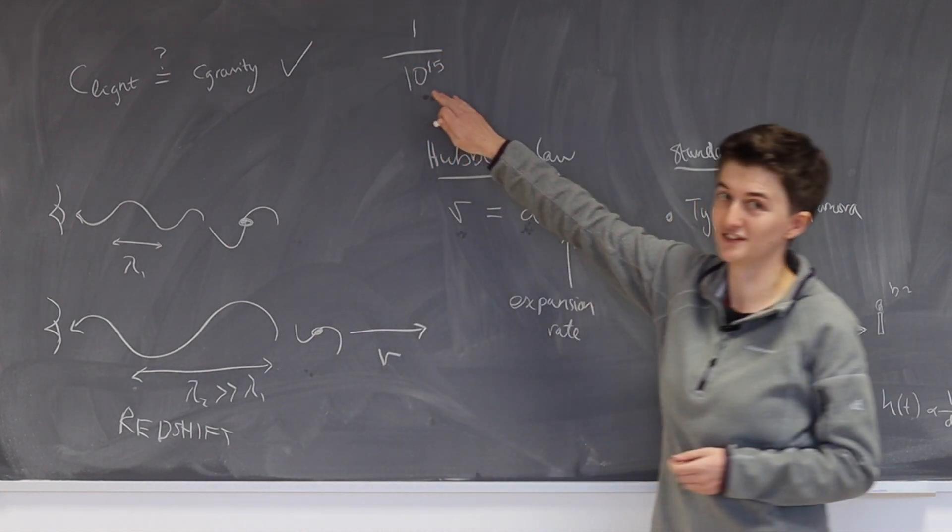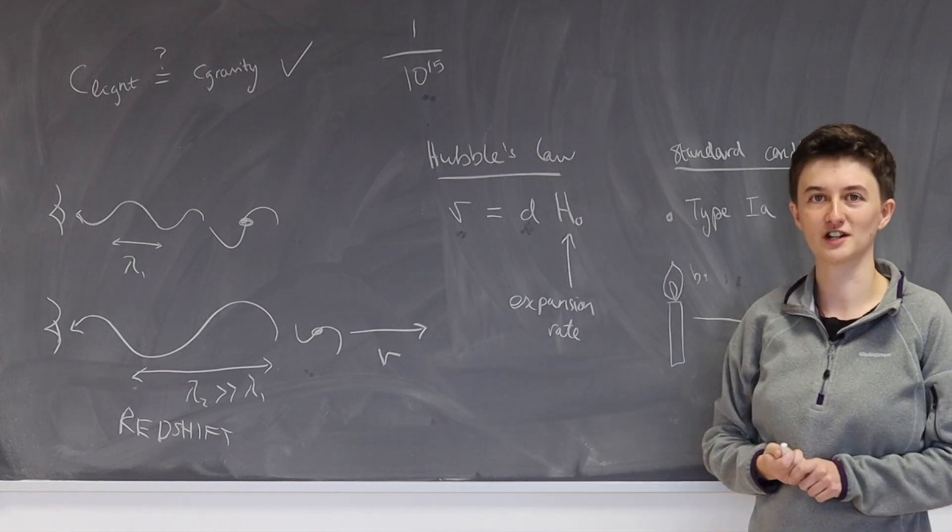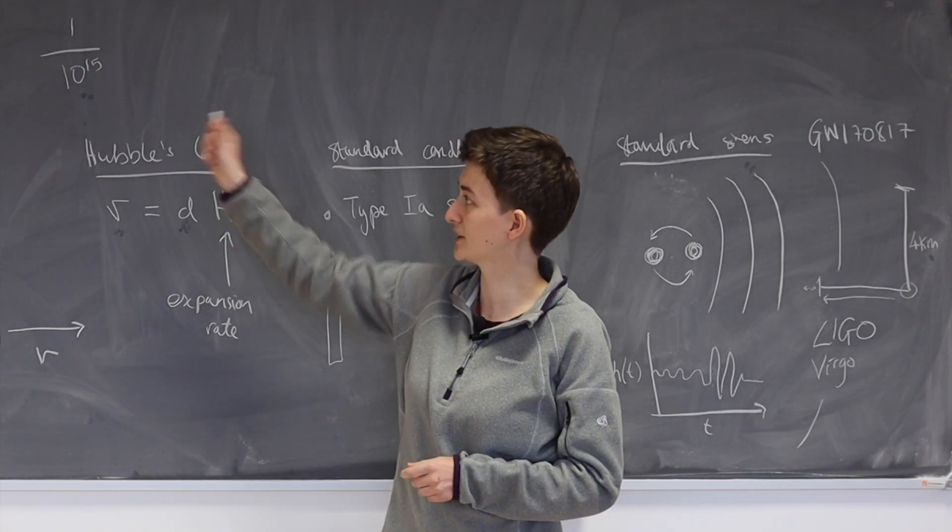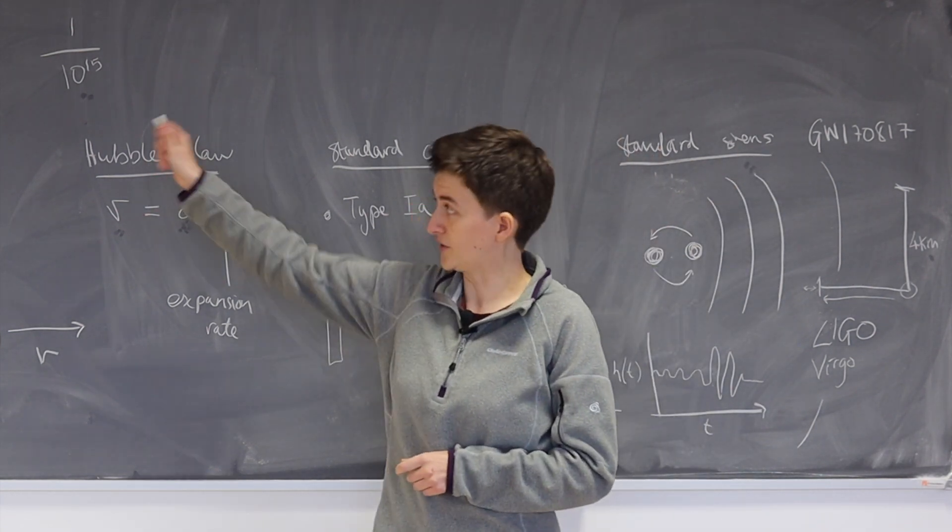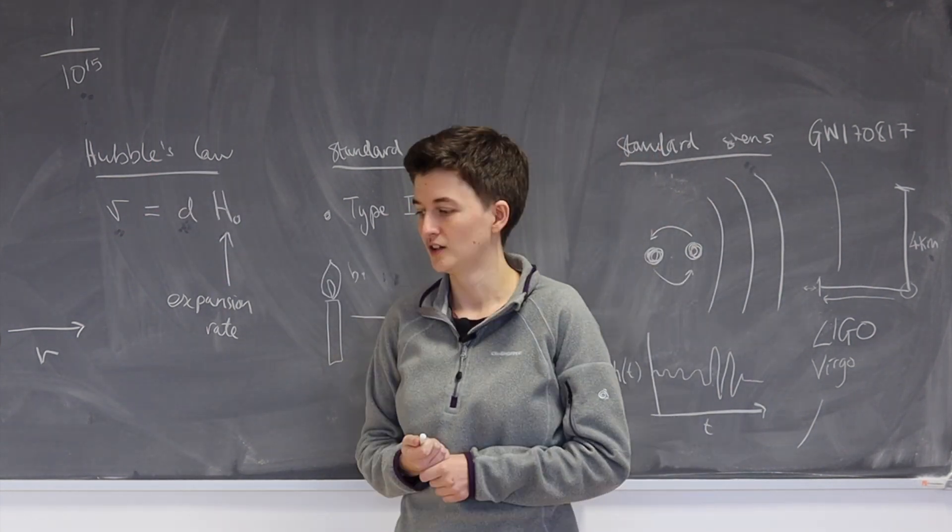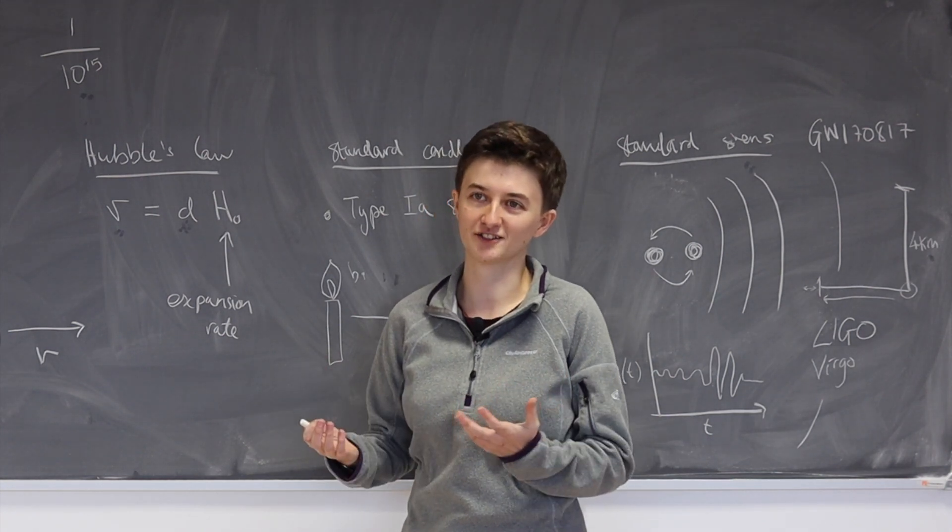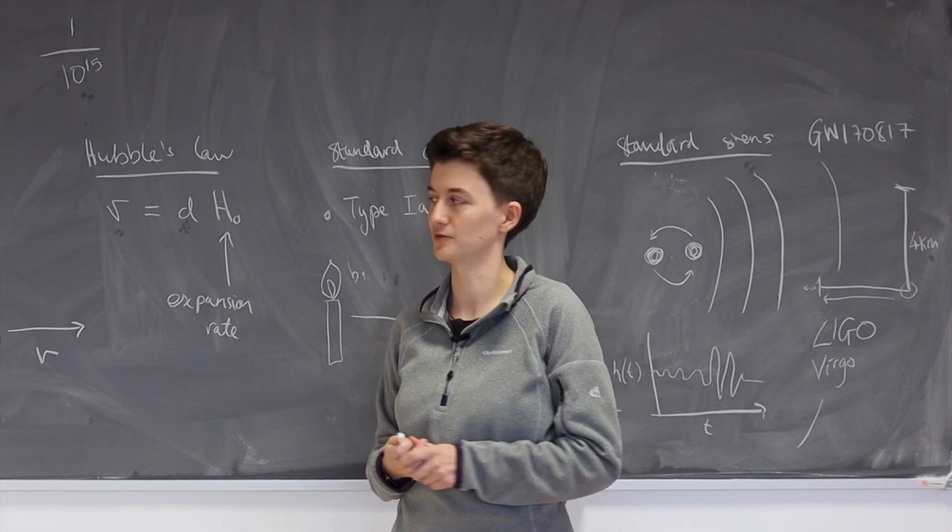So that's 10 with 15 zeros after it, so they're virtually identical. So this was really important. Just from that one single event, GW170817, this question was able to be answered. So this was another excellent demonstration of the validity of general relativity.